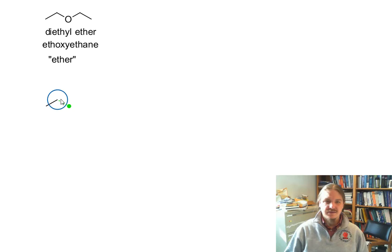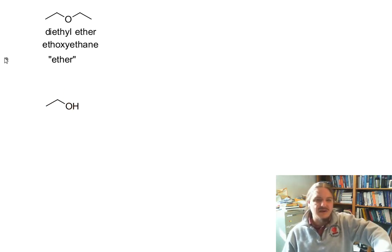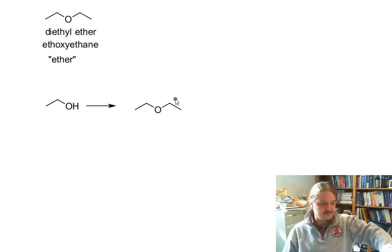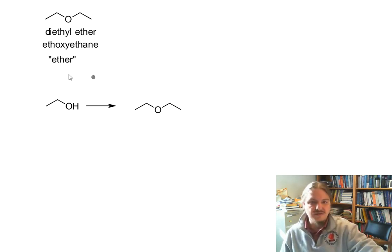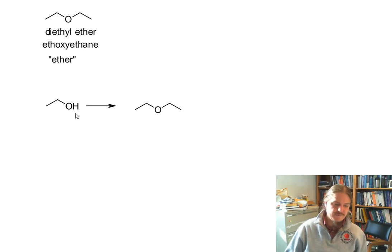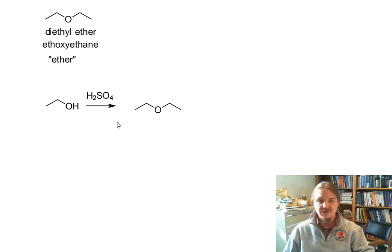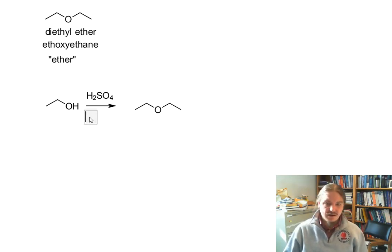Industrially, diethyl ether is prepared from the reaction of ethanol under certain kinds of acidic conditions. And the favorite acid in this particular reaction is sulfuric acid. Some folks will tell you that this happens at low temperatures because at high temperatures, there's an elimination process that can take over.